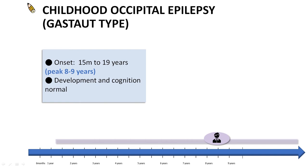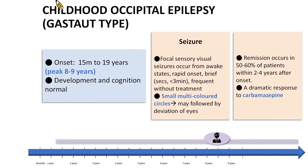The third example of childhood onset epilepsy is Childhood Occipital Epilepsy, Gastaut-type. This syndrome is characterized by onset of seizures between 15 months and 19 years of age, peaking at 8 to 9 years. Focal sensory visual seizures occur from awake states, have rapid onset, are brief, and may be frequent without treatment. Typically, the patient may describe visual phenomena as small multi-colored circles, followed by deviation of the eyes. Remission occurs in about 50 to 60% of patients within 2 to 4 years after onset. Dramatic response to carbamazepine is seen in more than 90% of patients.